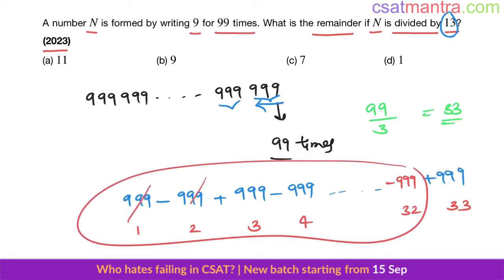So divisibility rule of 13 is, if this result is divisible by 13, this number is divisible by 13. If this result is not divisible by 13, this number is not divisible by 13.